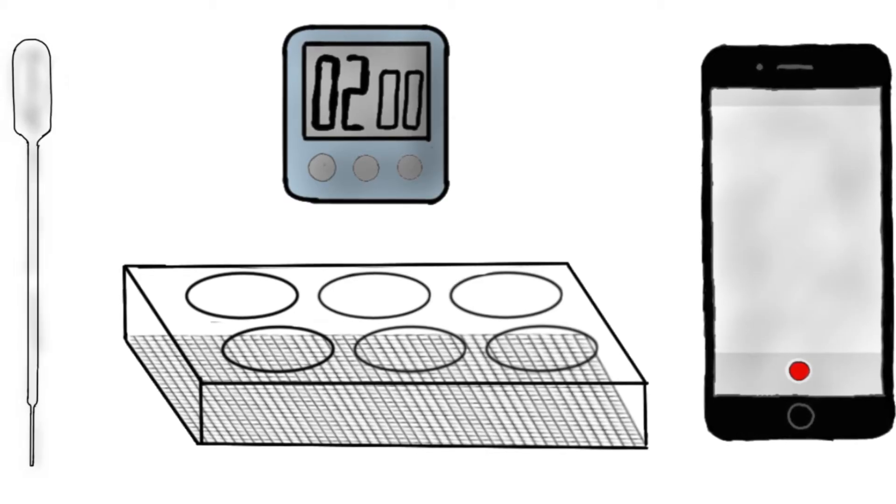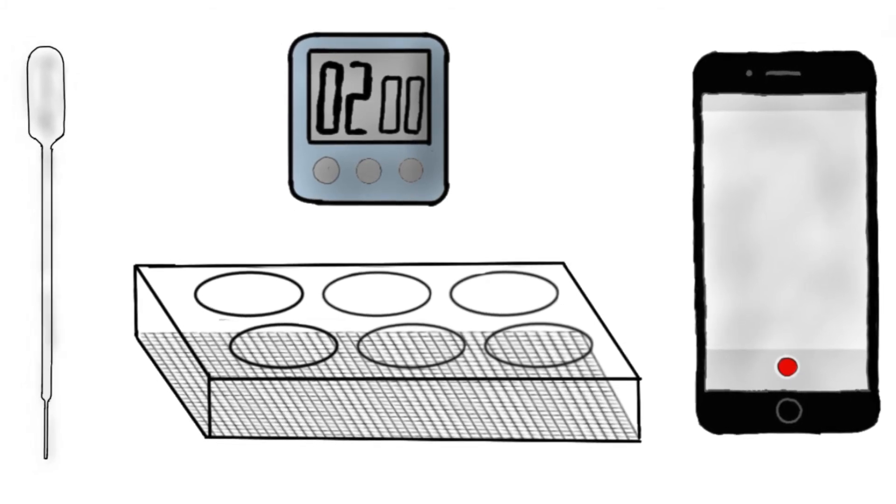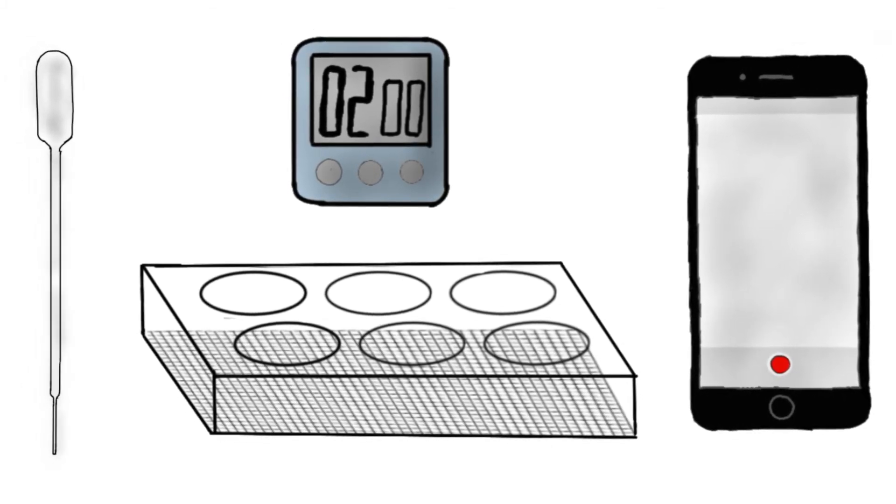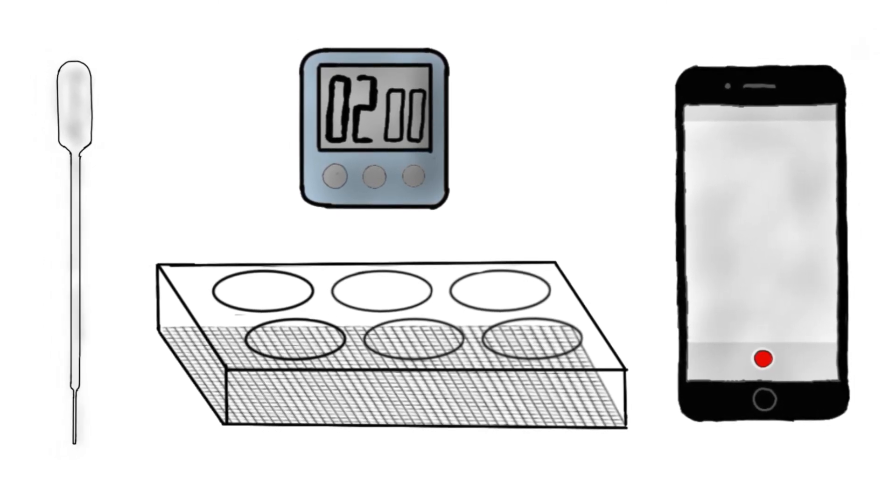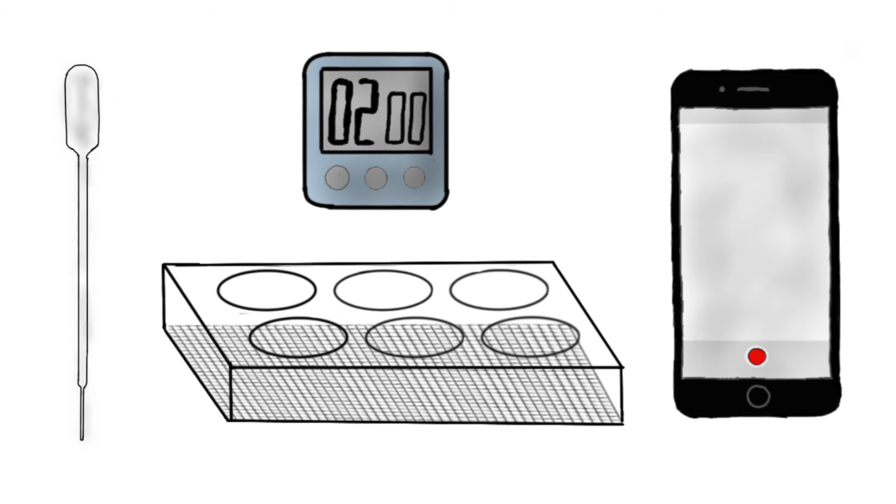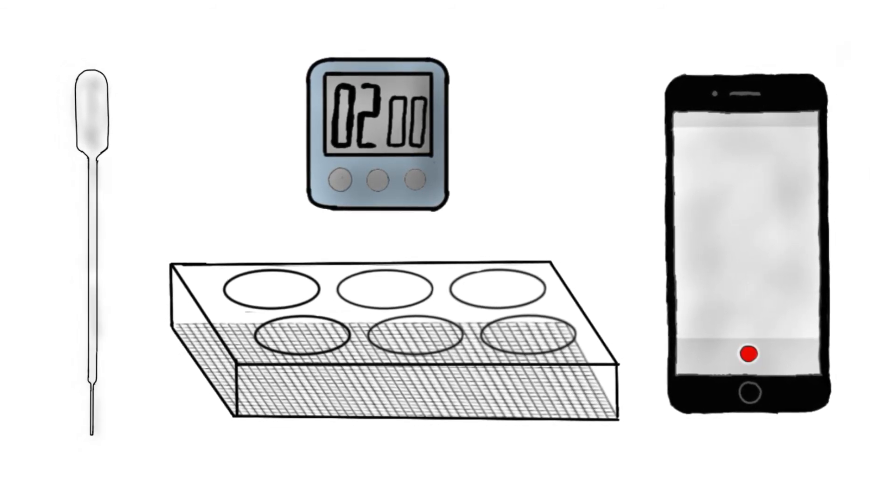The planaria were placed in a petri dish with a solution containing an addictive substance. There were also some samples that were untreated as controls. The planaria were then studied for two minutes and filmed. Afterwards, these videos were watched and any of the above stereotypies were recorded.